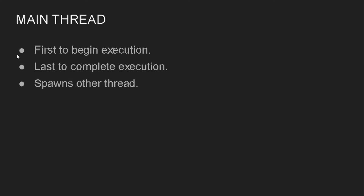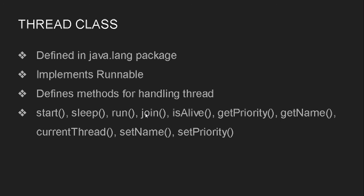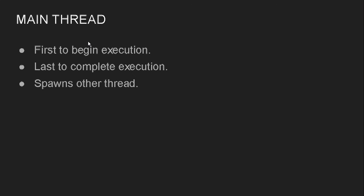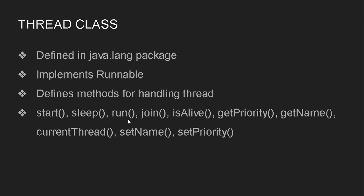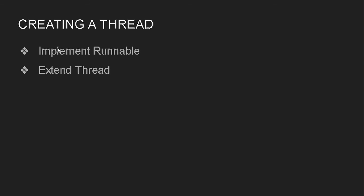Unless we create a main method we cannot run a Java program, and when we do, the main method is called. Inside the main method we call other methods, so the Java program automatically creates a main thread whose entry point begins in main(). For custom threads it begins in the run() method. The reason the main thread entry point is in main() is because it is created automatically — we don't manually create the main thread. For custom threads we need to manually create them, which is why their entry point begins at run().